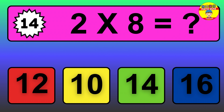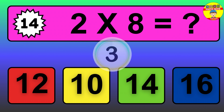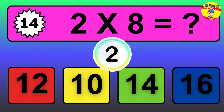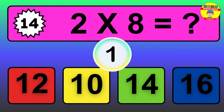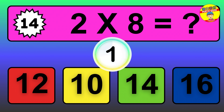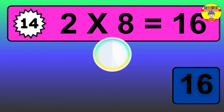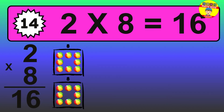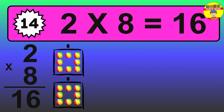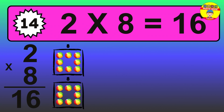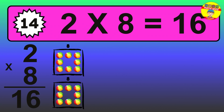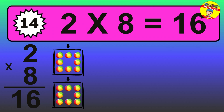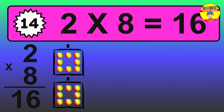Question 14. 2 times 8 equals what? The answer is 2 times 8 is 16. To calculate, we have 2 groups with 8 balls each one. So, how many balls do we have? 16 balls.